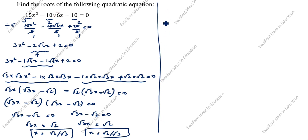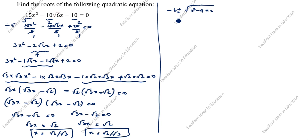Now we will see the second method. We will use the quadratic formula: x equals minus b plus or minus √(b² minus 4ac), all divided by 2a.